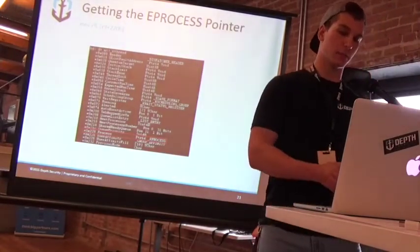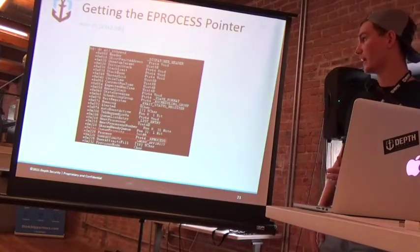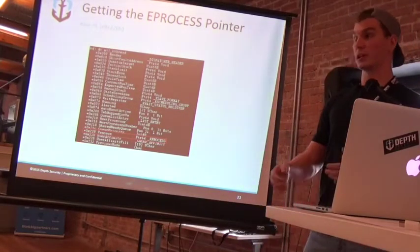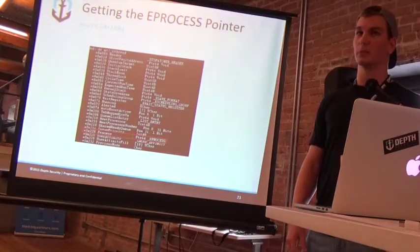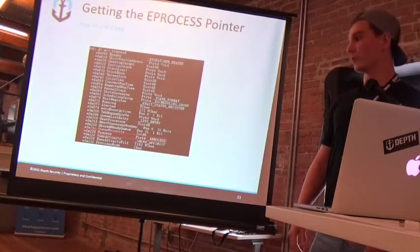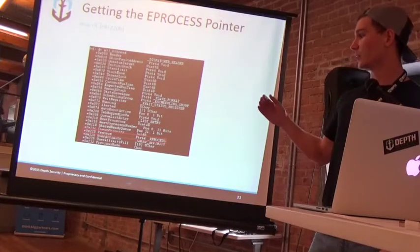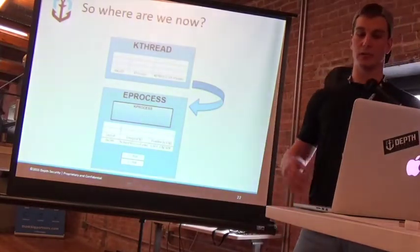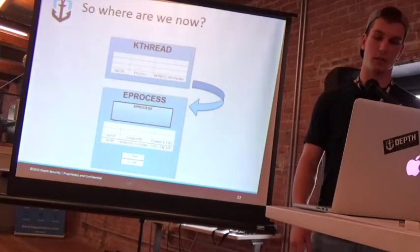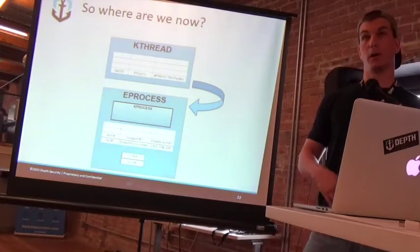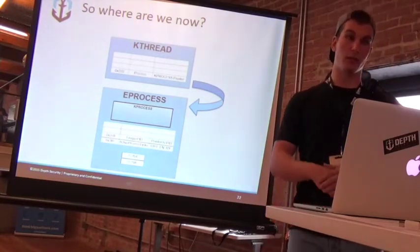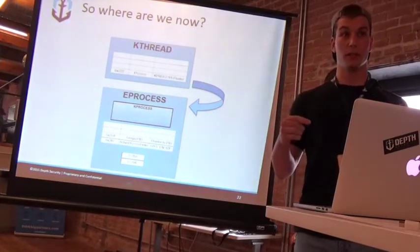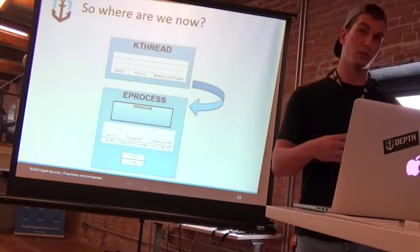Now we want to get to the eProcess structure. Once we get to KTHREAD, we have a pointer to KTHREAD. At 0x220 hex down, I should mention that some of these offsets change depending on the operating system — all the kernel structures are different going all the way back, so you can dynamically generate these depending on how stable you want the exploit to be, but that takes a lot more work. At 0x220 hex in, you've got a process structure member, and that gives you a pointer to KProcess. The KProcess is actually an embedded structure within eProcess, and it starts at offset zero. So inadvertently, from getting a KProcess pointer, we have an eProcess pointer.